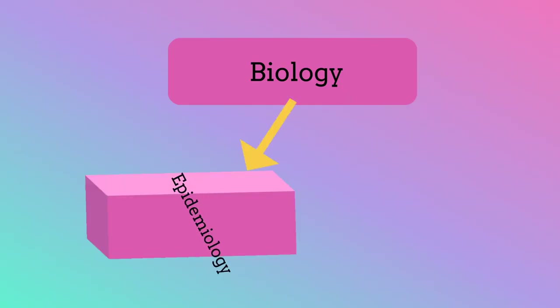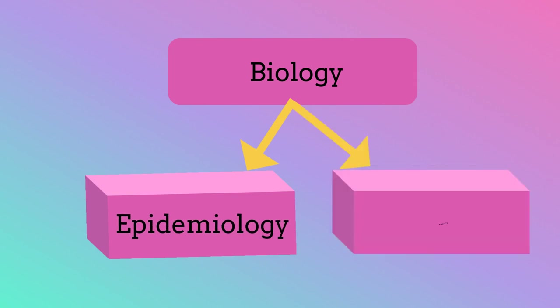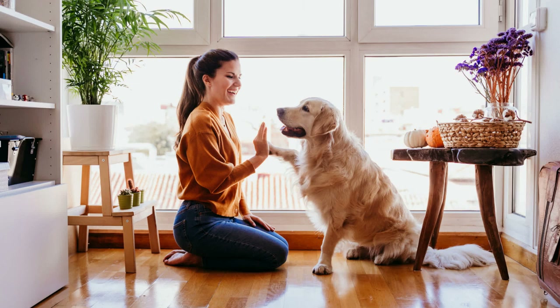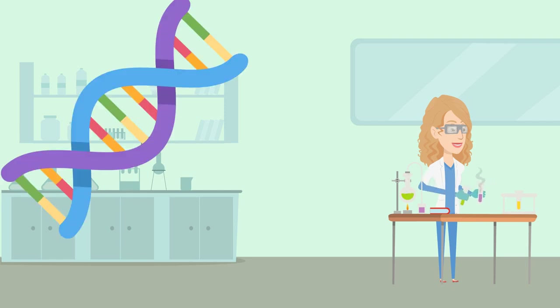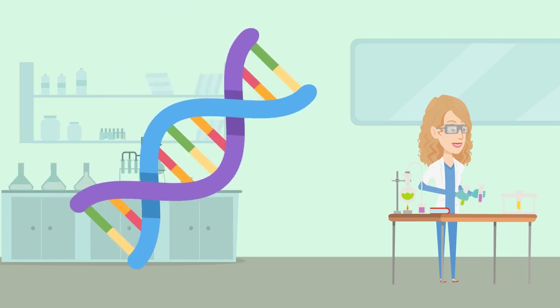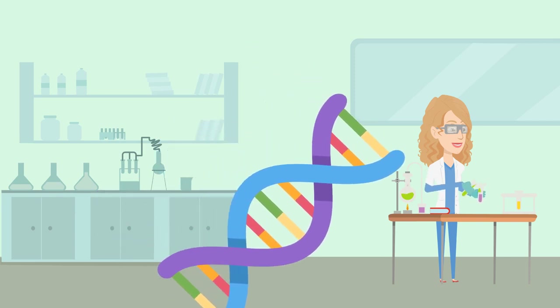If we speak from a biological perspective, we are talking about the epidemiological vector, which is an organism that spreads the disease but is not infected. For example, some animals can transmit diseases to humans, but the animals don't have signs or symptoms of the disease. For molecular biologists, on the other hand, a vector is a DNA molecule used as a vehicle to artificially carry foreign genetic material into another cell.